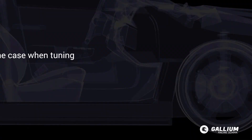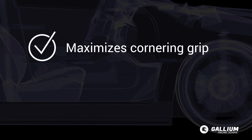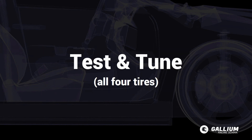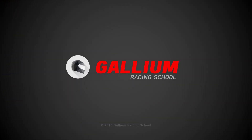As is always the case when tuning cars, there is a compromise to be made. We need to find a camber angle that maximises cornering grip without impairing straight-line handling too much. Even when using a tuning calculator that gives a starting camber, it's up to us to test and tune to get that perfect balance. Now you should have everything you need to start fine-tuning camber.